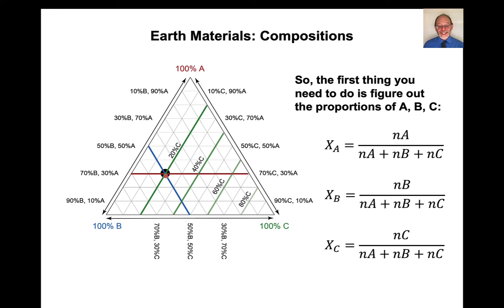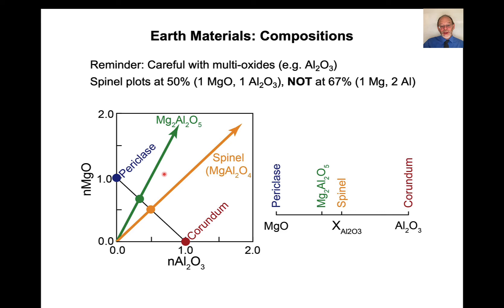Now, you can see it only takes two compositions to figure out the plotting position. Always do all three. Always plot up all three. If they intersect at a point, then you know you got your plotting position correct. If they plot up in a triangle, it means that one or more of your plotting positions is incorrect. And so this serves as a double check for where the composition actually plots. And again, you got to be really careful with components that are multiples of the cations. So spinel plots at 50% Al2O3 plus MgO, even though it has two aluminums in it.